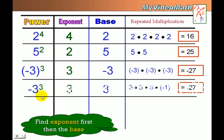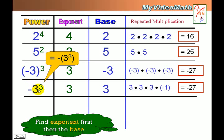Let's look at this one. It is very similar, but the exponent is 3 and the base is not negative 3 — just 3. So the factor form is 3 times 3 times 3, times negative 1, because of the negative sign outside the power. This power has the same representation in that way.